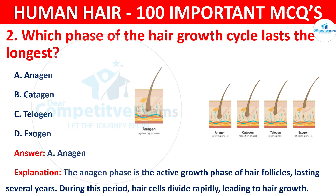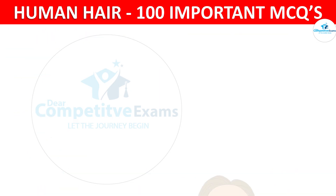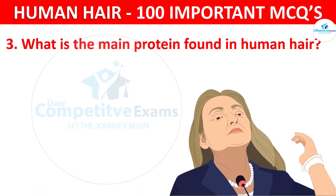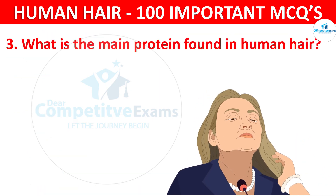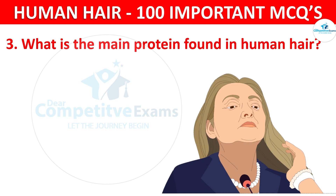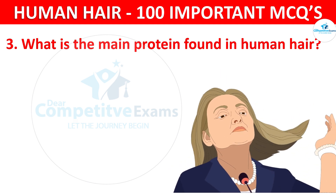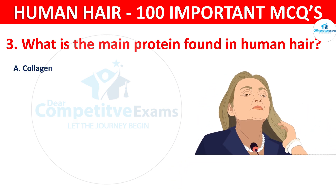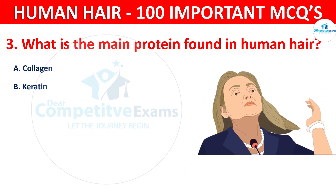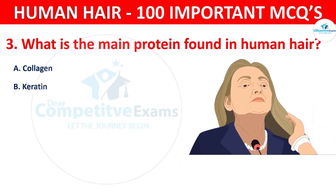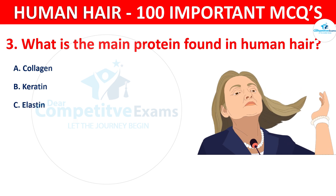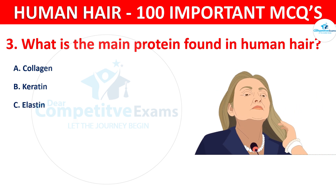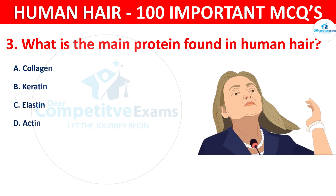Question number 3. What is the main protein found in human hair? Your options are collagen, keratin, elastin, or actin.